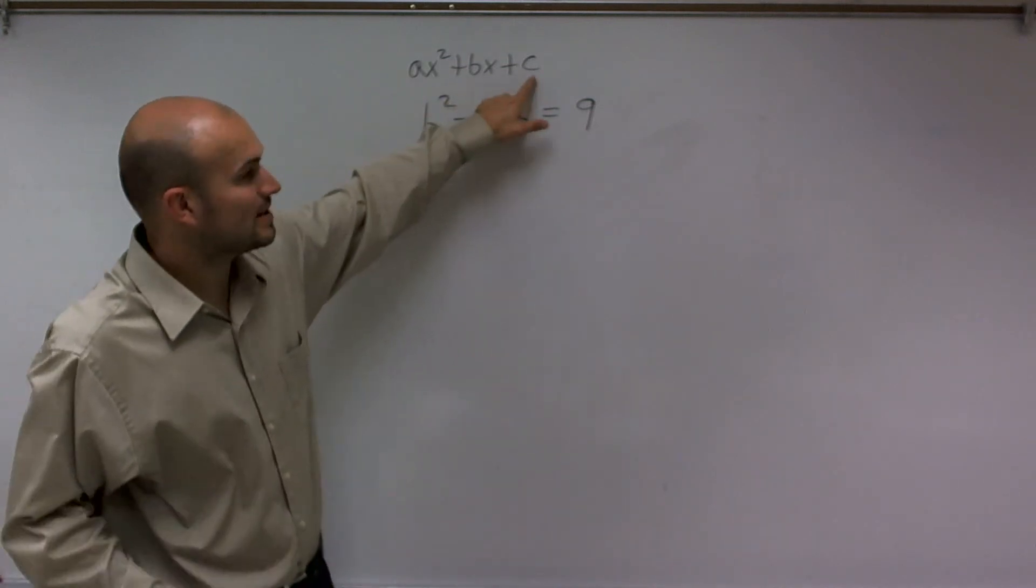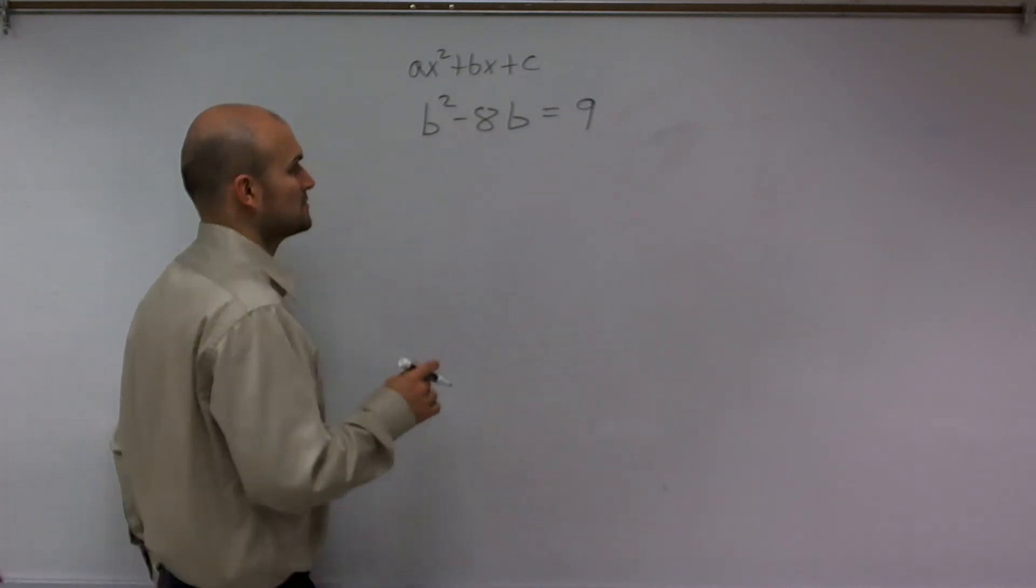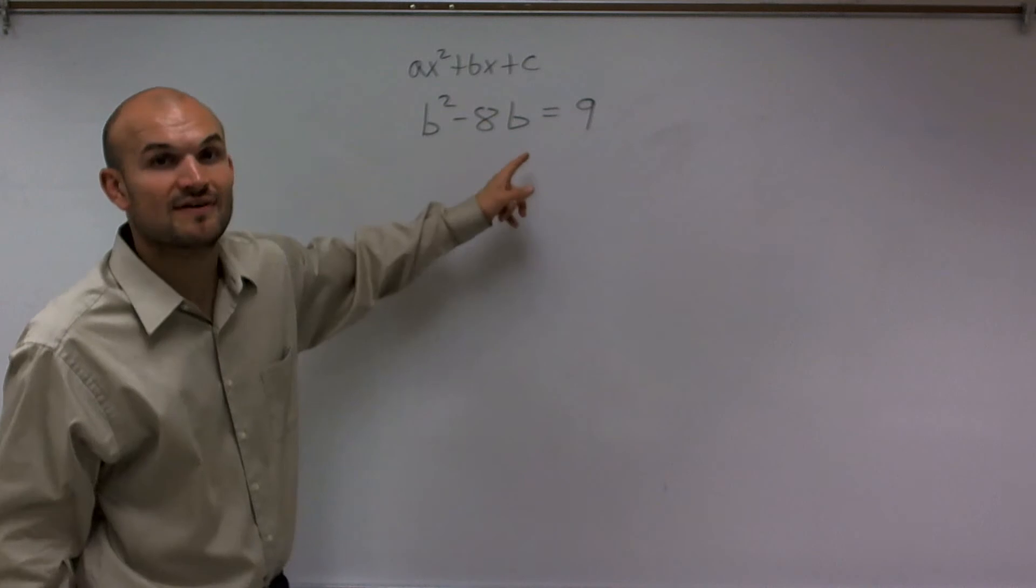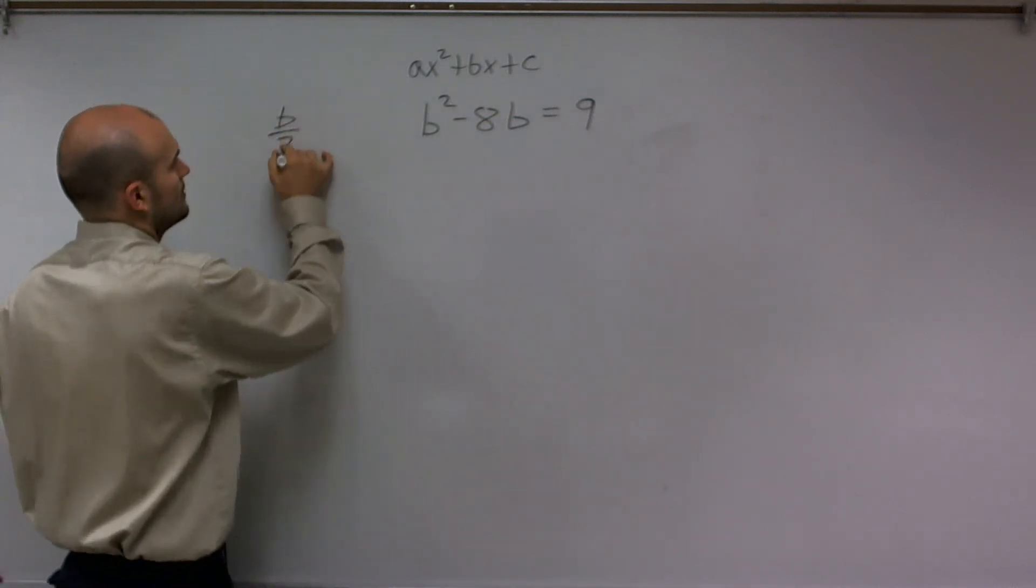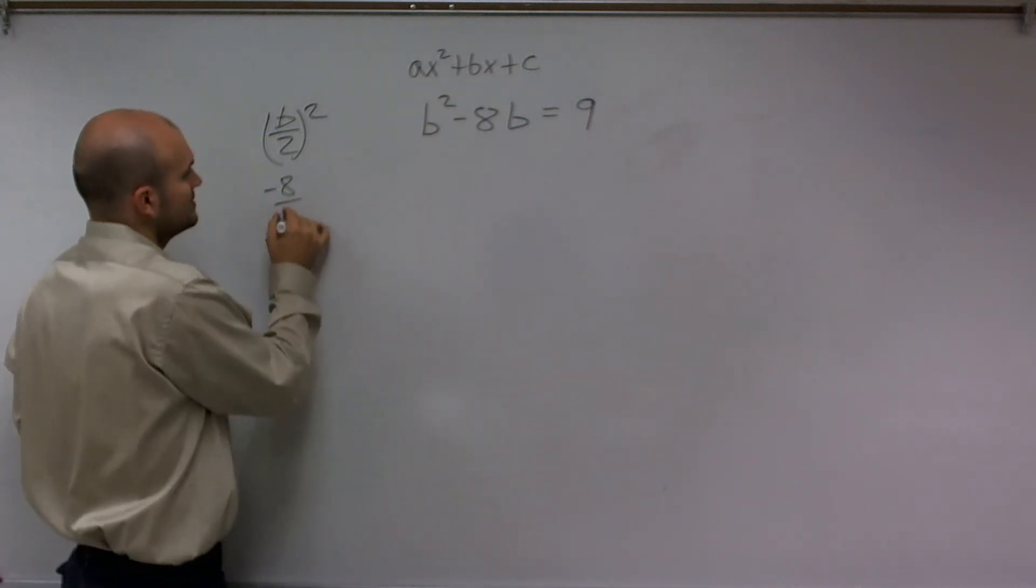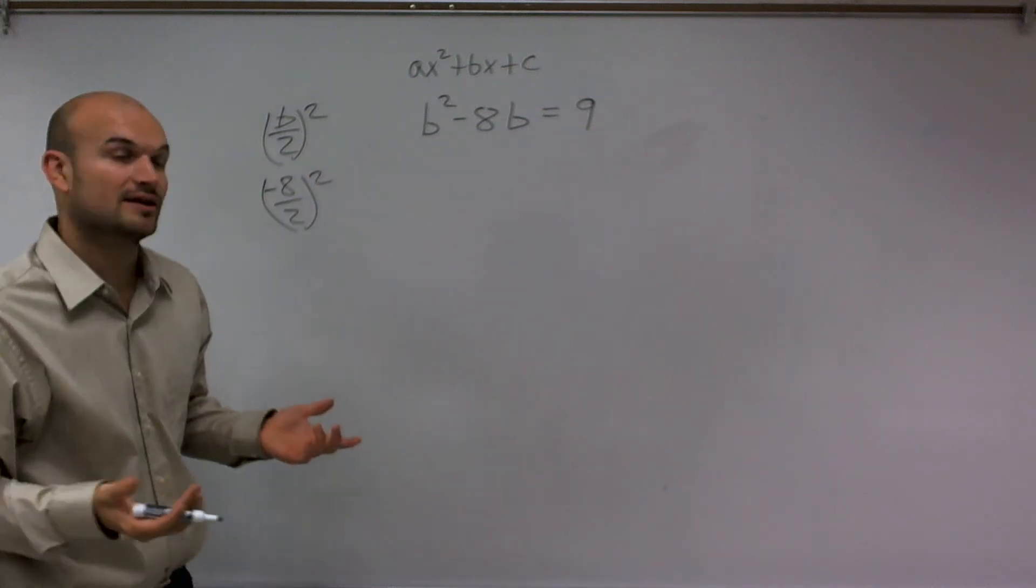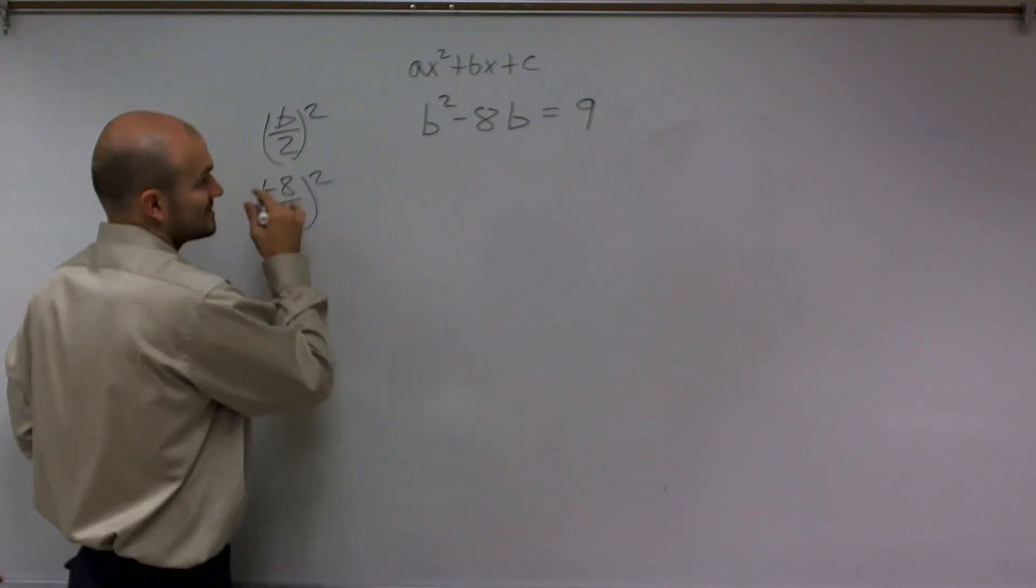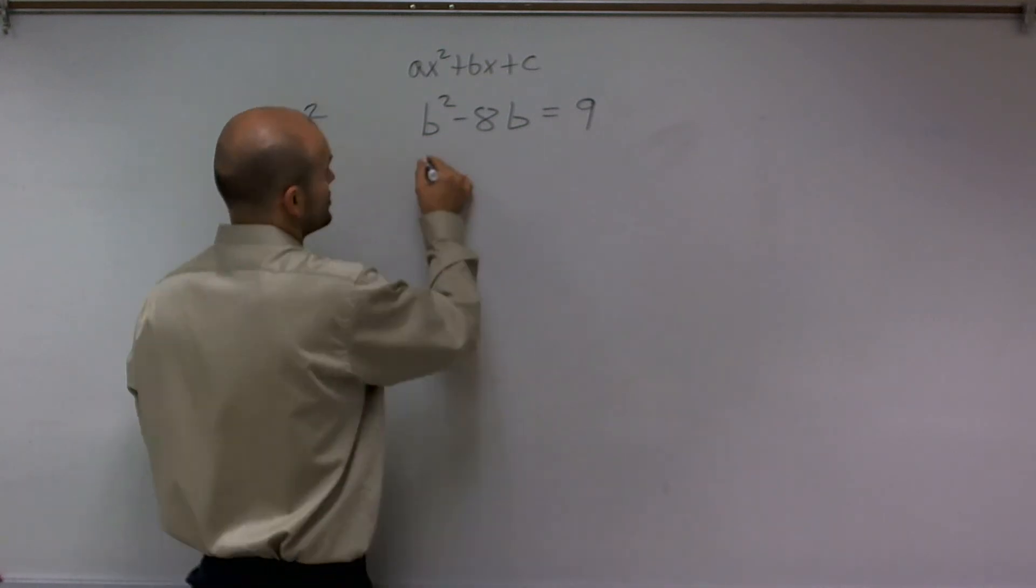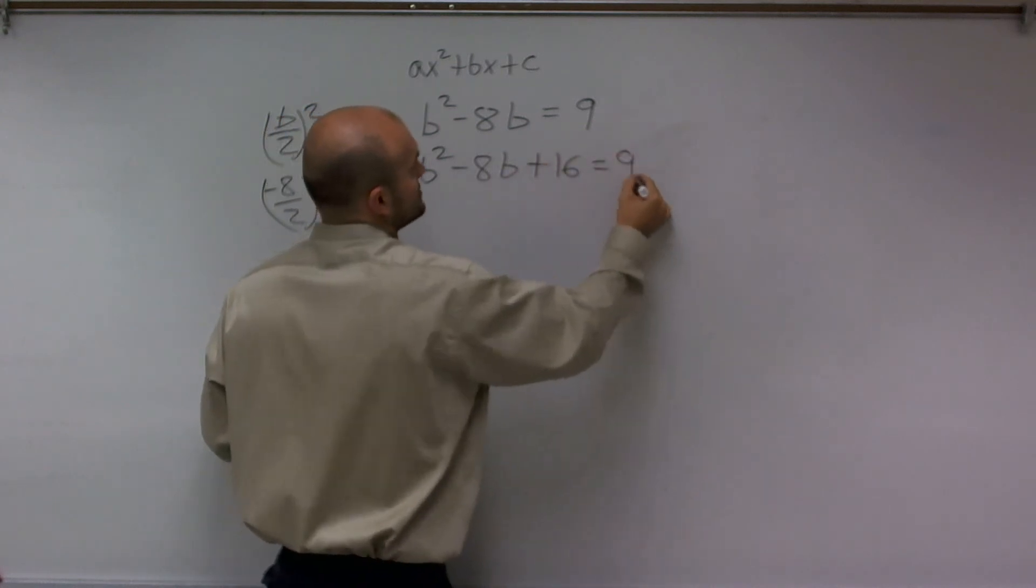How do we find that perfect c? You take b divided by 2 and then square it. My b in this problem is negative 8. So I have negative 8 divided by 2, and then I square it. Negative 8 divided by 2 is negative 4. Negative 4 squared is 16. So I'm going to add 16 on both sides. I have b squared minus 8b plus 16 equals 9 plus 16.